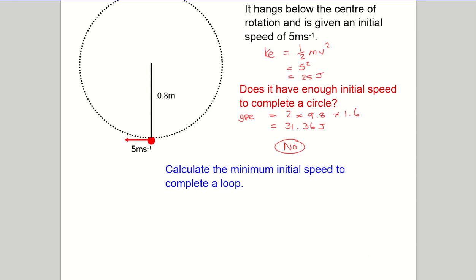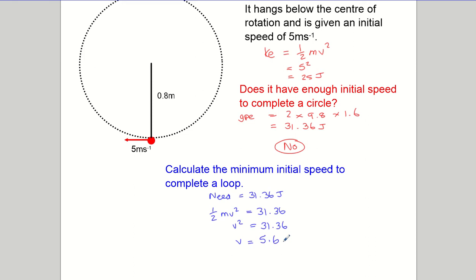Part two asks for the minimum initial speed to complete the loop. We've calculated you need a minimum of 31.36 joules. If we have exactly 31.36 joules, we'll make it and be stationary at the top. So: half mv squared equals 31.36 joules — with half m equal to 1, v squared equals 31.36, and taking the square root gives v equals 5.6 meters per second. That's enough energy to raise the particle by 1.6 meters to get to the top.